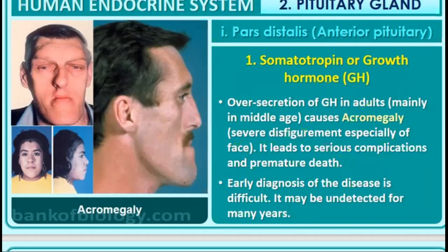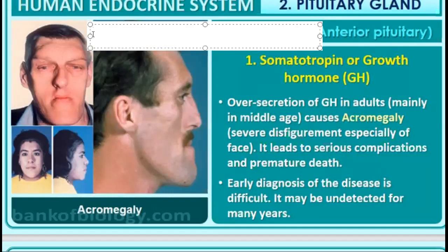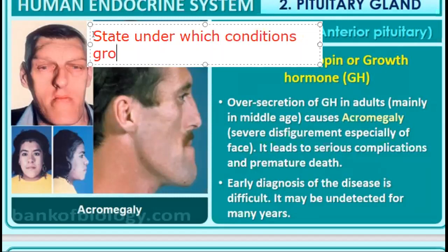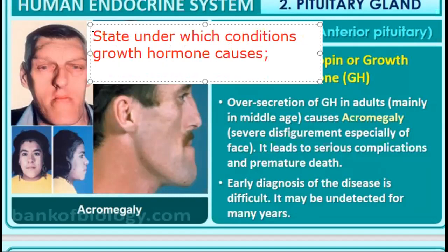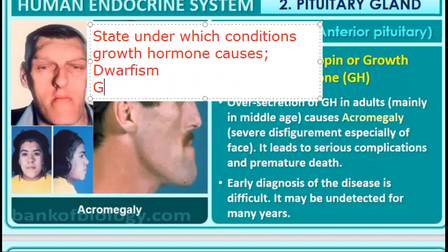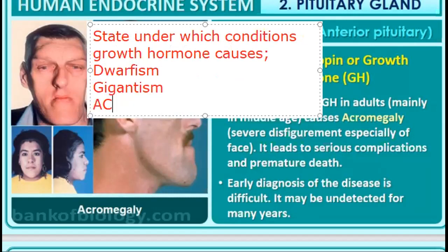Over-secretion of growth hormone in adults — mainly after 18 years of age — causes acromegaly. Acromegaly means severe disfigurement, especially of the face. The shape becomes strange and distorted due to the hormonal disorder. It can lead to serious complications and even premature death. So students, remember that growth hormone alone can cause three different disorders depending on the conditions: dwarfism, gigantism, and acromegaly.